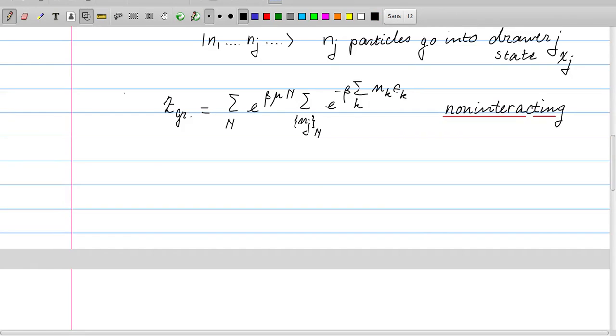You should also note that there is a subscript n here with the numbers nj, because here I have summed over all the total particle numbers, which can vary from 0 to 1, etc. And then, for each fixed n, we can fill the levels with particles nj, but they should add up to the capital N. So that's what this means. It means that the sum over j of nj is equal to n.